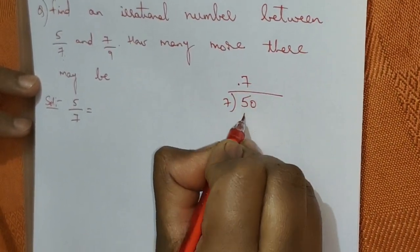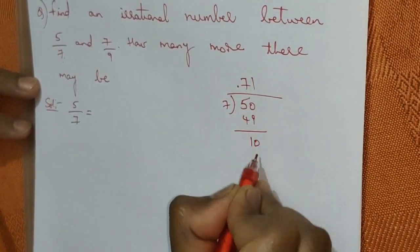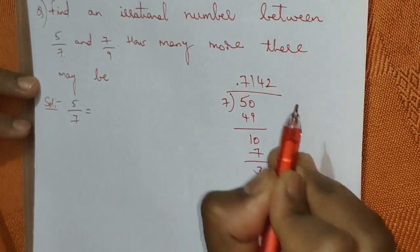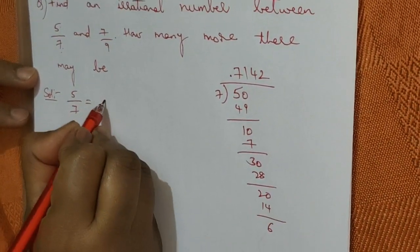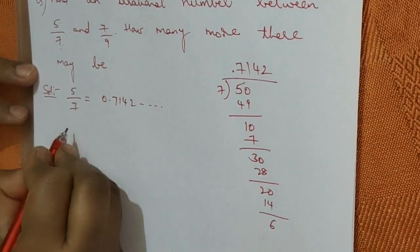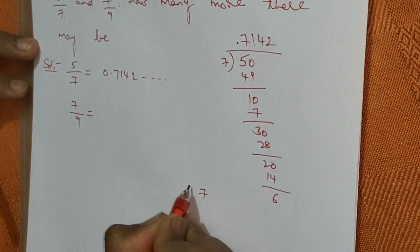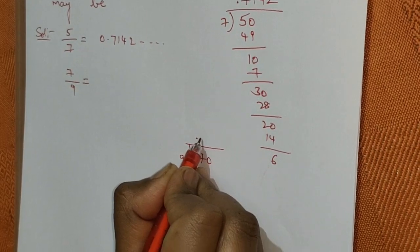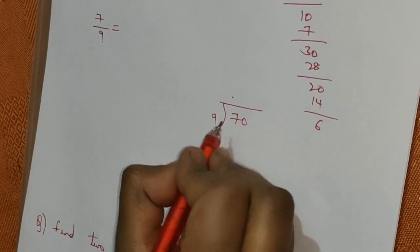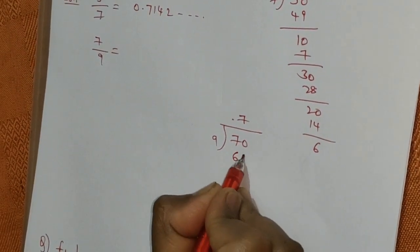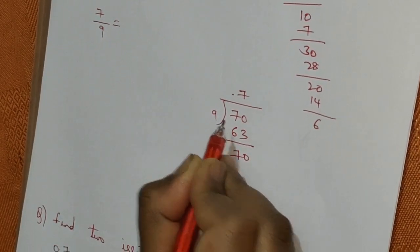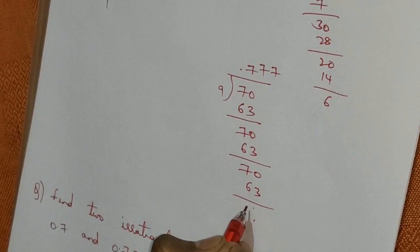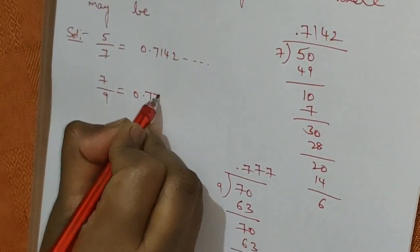Dividing 5 by 7: put a decimal point. 7 into 50 is 49, remainder 1. 7 into 10 is 7, remainder 3. 7 into 30 is 28, remainder 2. 7 into 20 is 14, remainder 6. This continues, giving 0.7142 and so on. Then 7 by 9: dividing 7 by 9, we get 9 into 70 is 63, remainder 7. The remainder repeats, giving 9 into 70 is 63 again, and it continues as 0.777 and so on.